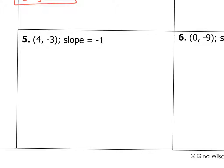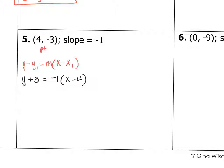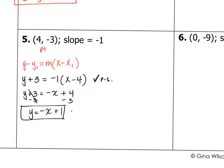Let's do number 5. We have a point of (4, negative 3) with a slope of negative 1. We'll start with point-slope form since we were given a point and a slope. Our point is x equals 4 and y equals negative 3. So y minus negative 3 — which becomes y plus 3 — is equal to negative 1 times x minus 4. That's our point-slope form. Now distributing the negative 1 gives negative x plus 4, then subtract 3 from both sides: y equals negative x plus 1. That's our slope-intercept form.